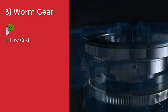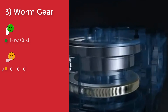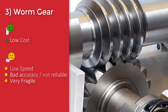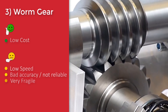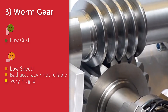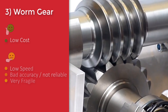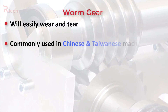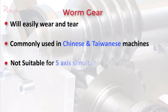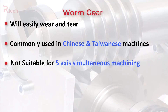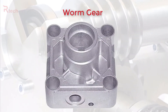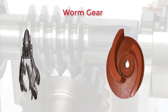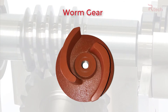Worm gears are a very traditional transmission system and cannot meet modern precision machining standards. Their gear ratios give them a very rough start. They generate a lot of friction and give slow indexing speeds. This causes wear and tear over time, which will increase backlash. Worm gears are mostly used in budget brands, Chinese and Taiwanese machines, and fourth and fifth axis attachments for three-axis standard machines. This type of transmission system is still okay for general part machining but is not suitable for precision machining or five-axis simultaneous machining.